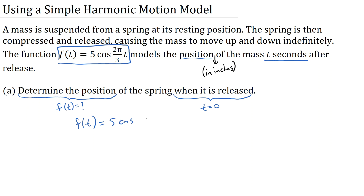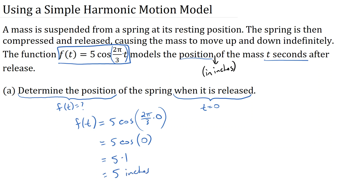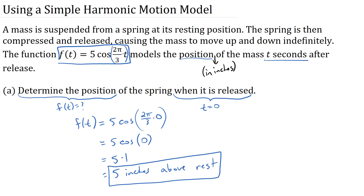We're going to use our model f of t and plug zero in for t. So we get five times the cosine of two pi over three times zero. Note that two pi over three times t is multiplication, so we're taking the cosine of all of that. In this case, two pi over three times zero is zero. The cosine of zero radians is one, so that's five times one, which equals five. The position is five inches, and since it's positive, the mass is five inches above rest when released.